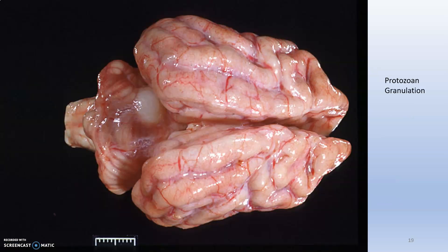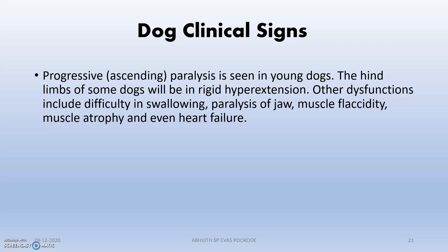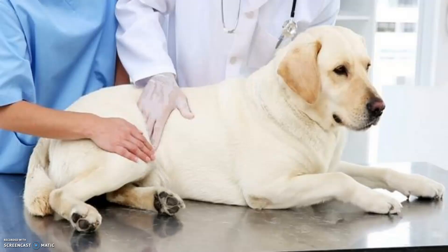Pathological findings include protozoan granulation tissue in the brain. Clinical signs in dogs include progressive ascending paralysis, particularly in young dogs. Other signs include difficulty in swallowing, paralysis of the jaw, and muscle flaccidity. Posterior paralysis is also observed.